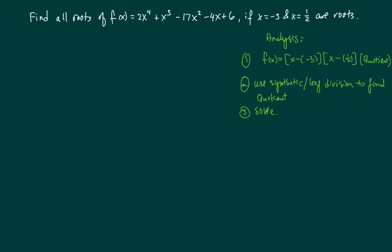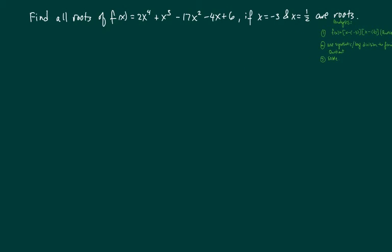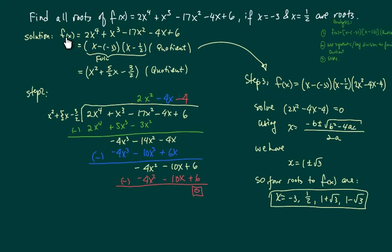Alright, let's write up the solution. So here's the solution. We're going to rewrite the function, the polynomial we're given, into x minus first root, x minus second root. We need to find out what the quotient is, which I will use long division in the next step.